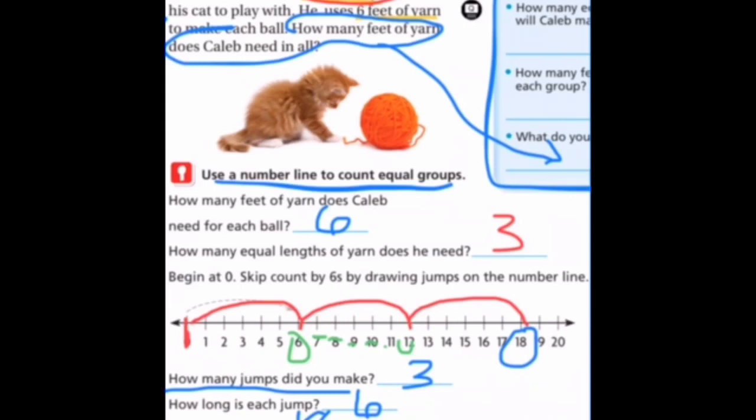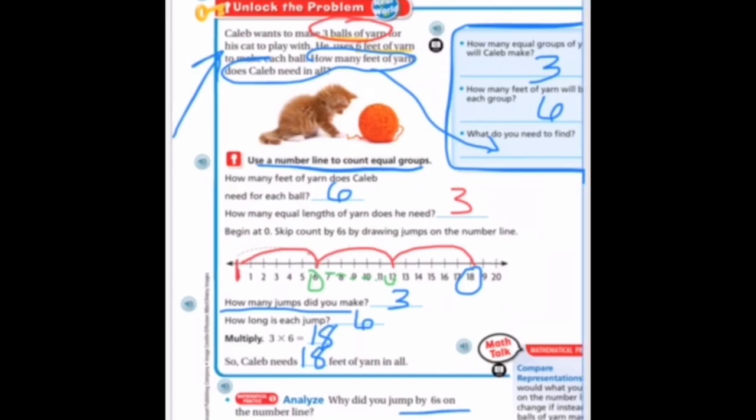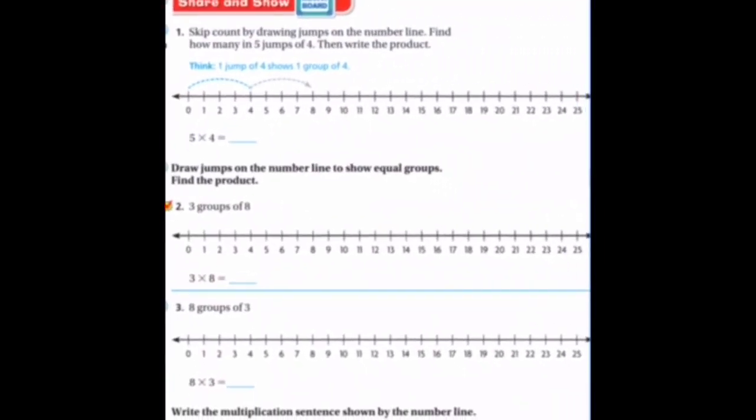Alright, and that'll do it for that page. Why did we jump by sixes? Because he used six feet of yarn on each ball. Alright, so I'm going to look at the next page. This is share and show. I'm only going to go over the first one, and then two, three, and four, you'll do on your own and come and show it to me.